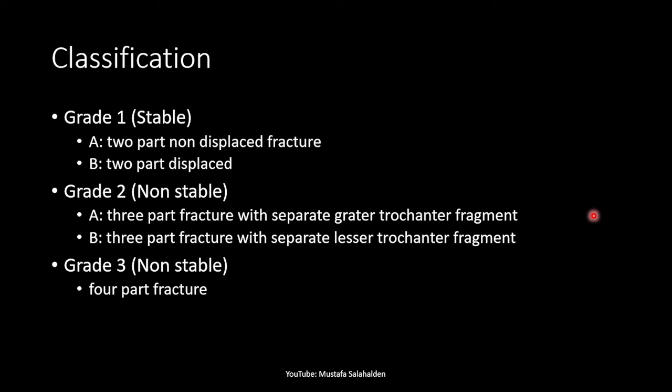In grade two it is a three-part fracture: type A has a separate greater trochanter fragment, and type B has a separate lesser trochanter fragment. Fractures in grade two are considered non-stable. In grade three there is a four-part fracture and it is also considered non-stable.